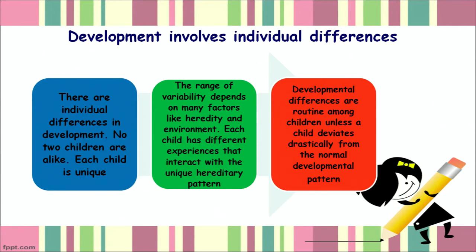The next important principle states that development involves individual differences. Every child is unique and different — no two children are alike, not even twins. They are idiosyncratic, with different skills, talents, and qualities. Although the sequence of development is fairly uniform and the pattern is predetermined and common to all children, the rate and pace of achieving these milestones may vary from one child to another. As caregivers, parents, and teachers, it is very important to appreciate and respect that children will have their own unique growth trajectories.